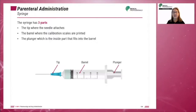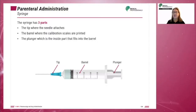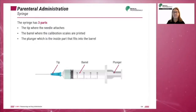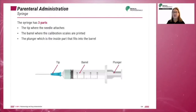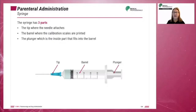The syringe has three parts: the tip, where the needle attaches; the barrel, where the calibration scales are printed; and the plunger, which is the inside part that fits into the barrel.